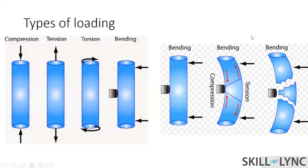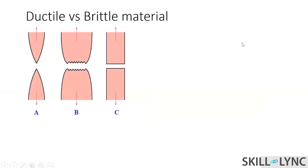So here's a question for you — feel free to type it in the chat box. The question is about materials. We have come across the terms ductile material and brittle material. The question is: which of these — shown as figures A, B, and C — corresponds to which type?